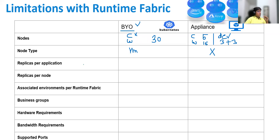Next we'll talk about replicas per application — how many replicas for high availability can we deploy per application. In both cases, you can go ahead and deploy up to eight replicas. So in the sandbox and production, you can deploy eight replicas of your main application.